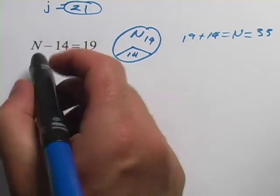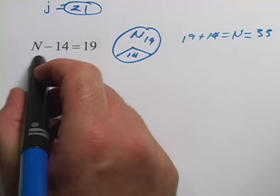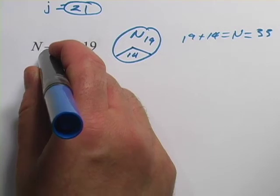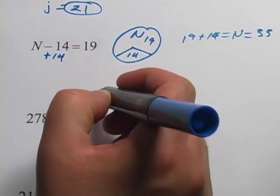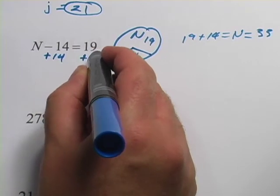Let's try this the algebra way. We want to get the N alone, the letter alone, and we have to undo this minus 14. The opposite of minus 14 is plus 14. But we have to do it on both sides of the equal sign, so I have plus 14 over here as well.